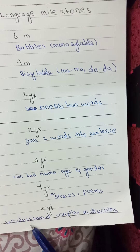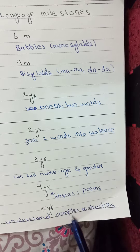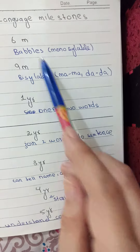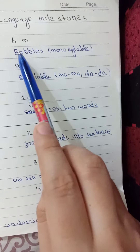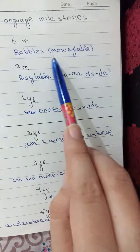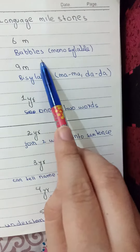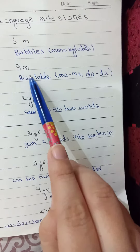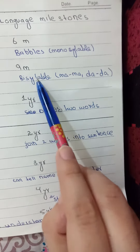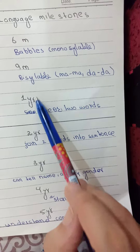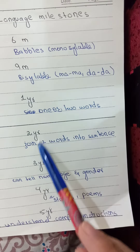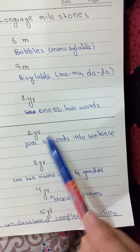At the age of five years, he begins to understand complex instructions. To recap: at six months, only monosyllable babbling; at nine months, babbling in bisyllables; word formation at one year; sentence formation at two years.